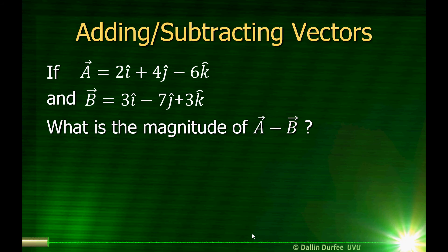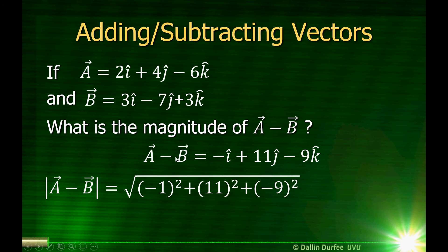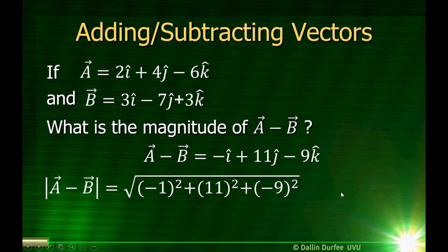What is the magnitude of a minus b? We already found what a minus b is. We indicate the magnitude of a vector by putting vertical lines on either side. The magnitude is found using the Pythagorean theorem — it's just the square root of the sum of the components squared. So this is the square root of negative 1 squared plus 11 squared plus negative 9 squared, which is the square root of 203, which is about 14.25.